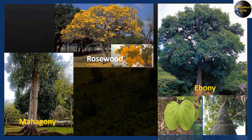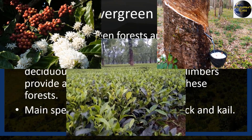Rosewood is found in impure stands. Mahogany grows in inaccessible forest areas due to its dense growth. The British were aware of the economic value of these forests in India. Forests were also cleared for introducing plantations of tea, rubber, and coffee.